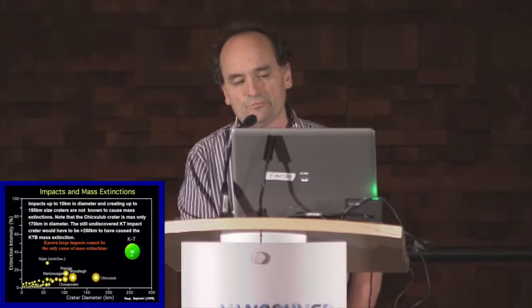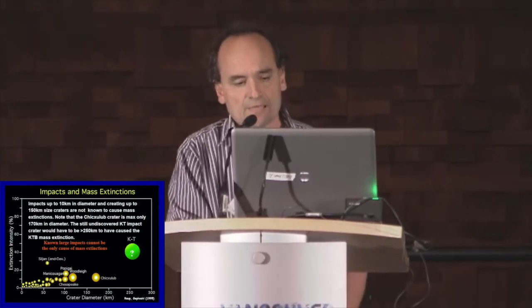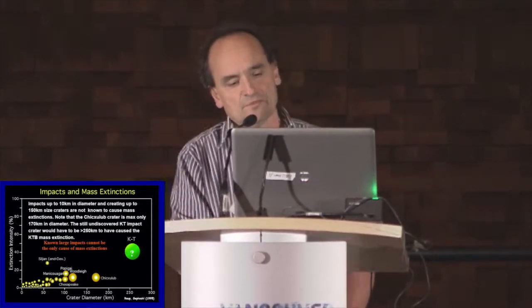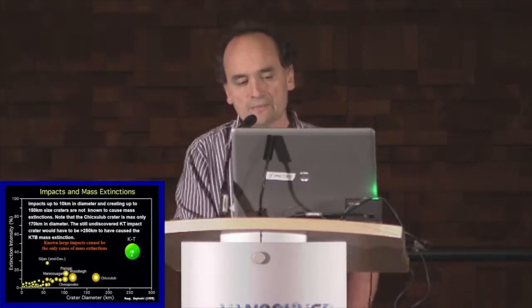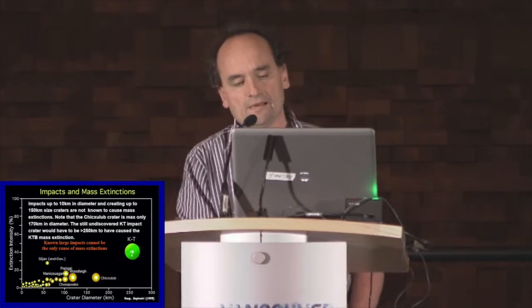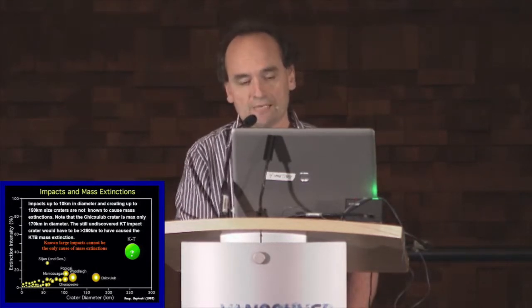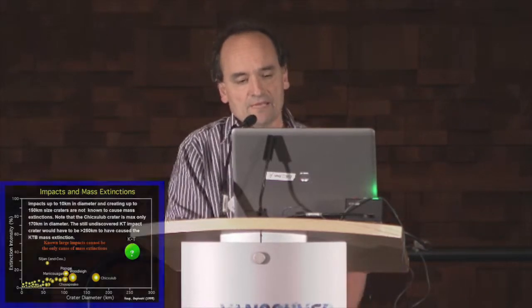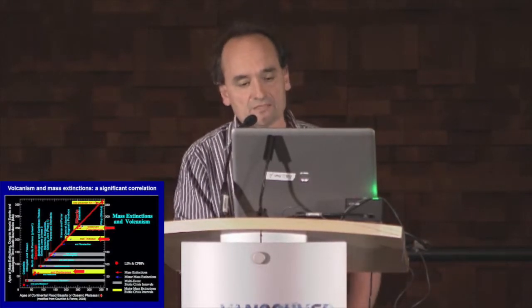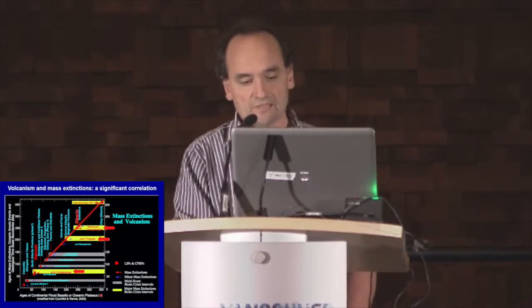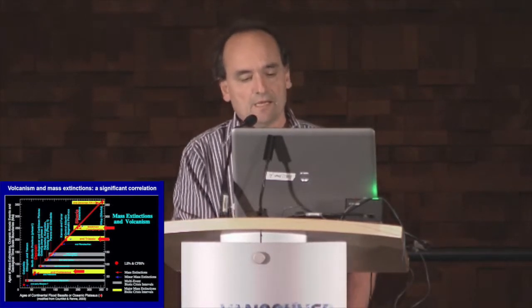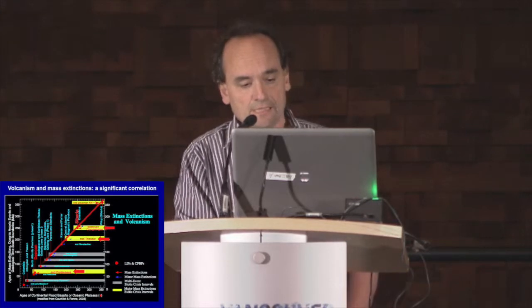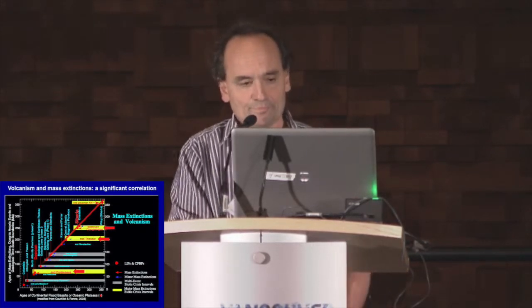We know we have an iridium anomaly in the red clay layer coinciding with an impact at the KT boundary, but we also have problems in terms of the dating of Chicxulub, which for us predates the KT boundary, and we don't have a good correlation between large impacts and mass extinction events. Reversely, we have a nice correlation between mass extinction and volcanism, and all five mass extinctions correspond to huge volcanic activity.